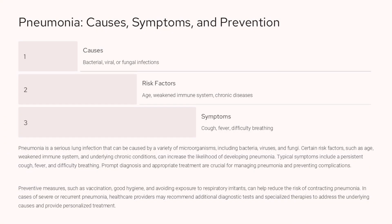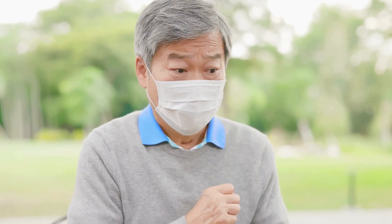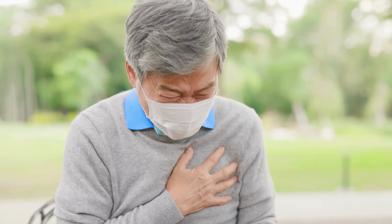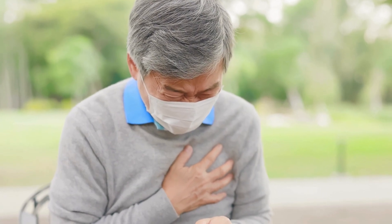Pneumonia is a serious lung infection that can be caused by bacteria, viruses, or fungi. Certain risk factors increase the likelihood of developing pneumonia, such as age, weakened immune system, and chronic diseases. Common symptoms include persistent cough, fever, and difficulty breathing. Prompt diagnosis and appropriate treatment are crucial for managing pneumonia and preventing complications. Preventive measures like vaccination, good hygiene, and avoiding respiratory irritants can help reduce the risk. In severe or recurrent cases, additional tests and specialized therapies may be recommended.